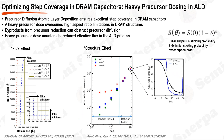The atomic layer deposition process plays a critical role in the fabrication of dynamic random access memory capacitors due to its ability to ensure excellent step coverage. ALD operates by alternately introducing gaseous species, known as precursors, to a substrate in a series of non-overlapping pulses, enabling precise and uniform deposition of materials. A heavier precursor dose is necessary in the ALD process within DRAM capacitors to ensure effective step coverage. The primary reason is to overcome the limitations imposed by the geometric structure of DRAM capacitors, particularly the high aspect ratio of these structures, especially in the latest processes involving the equivalent of 170 planar layers of precursors.